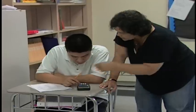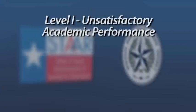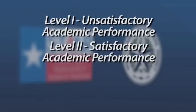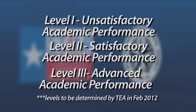A student's performance on these exams will fall into one of three performance categories: Level 1, Unsatisfactory Academic Performance; Level 2, Satisfactory Academic Performance; Level 3, Advanced Academic Performance. The Texas Education Agency is expected to set the standards for the three performance levels in February of 2012.